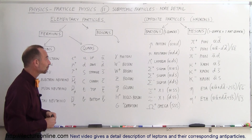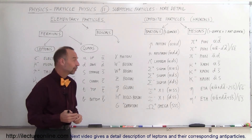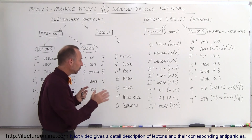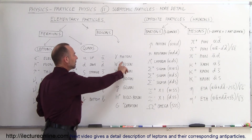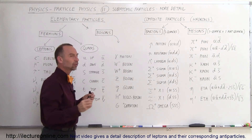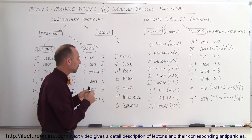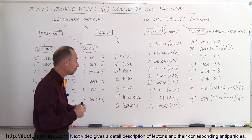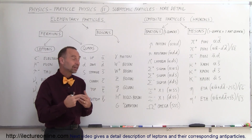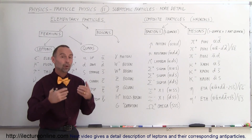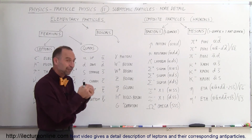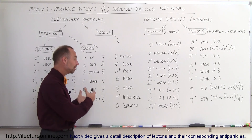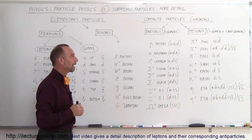Then we have the bosons. The photon is the one that mediates the electromagnetic force. The W and Z bosons are the particles that mediate the weak force. The gluon is the particle that mediates the strong force. The Higgs boson creates the Higgs field that seems to be responsible for giving particles mass. And then we have the graviton, which we haven't found yet, but which we theorize should be mediating the force of gravity.